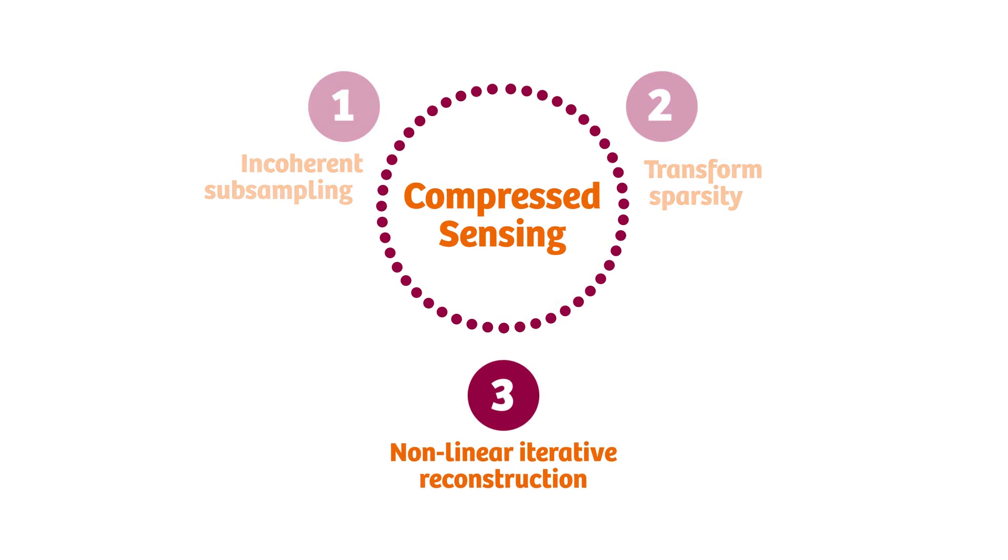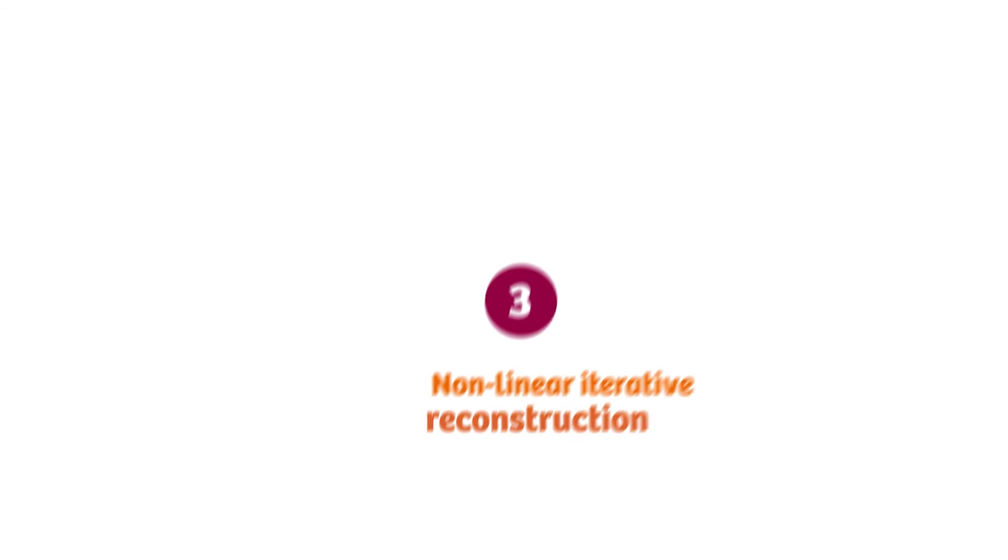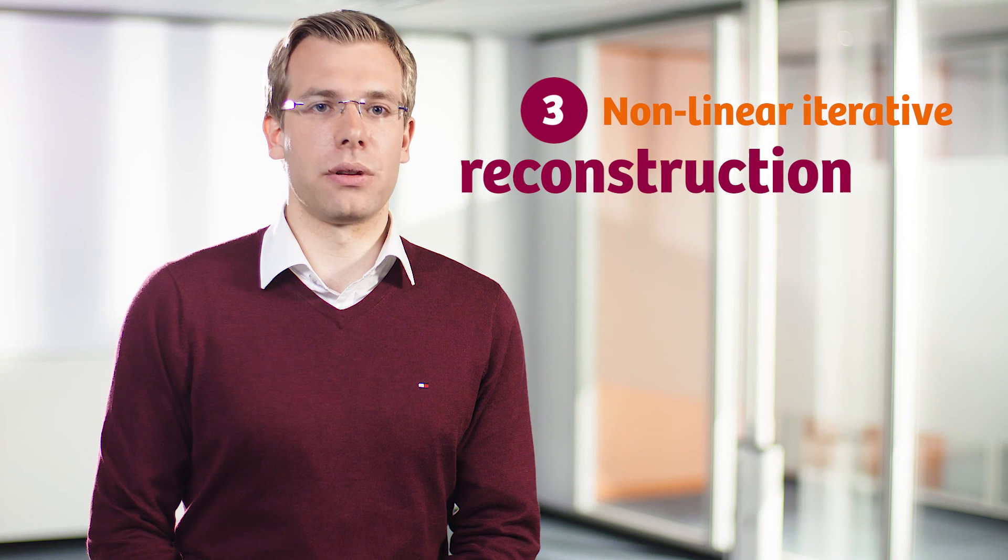Of course, it is not that easy to separate the noise from the valuable information in case of a real MR image. That's why we need the third ingredient of compressed sensing, the non-linear iterative reconstruction. Our goal is to achieve an optimum balance of data consistency and sparsity. That means we want to remove as much noise as possible, but not to remove useful image information.